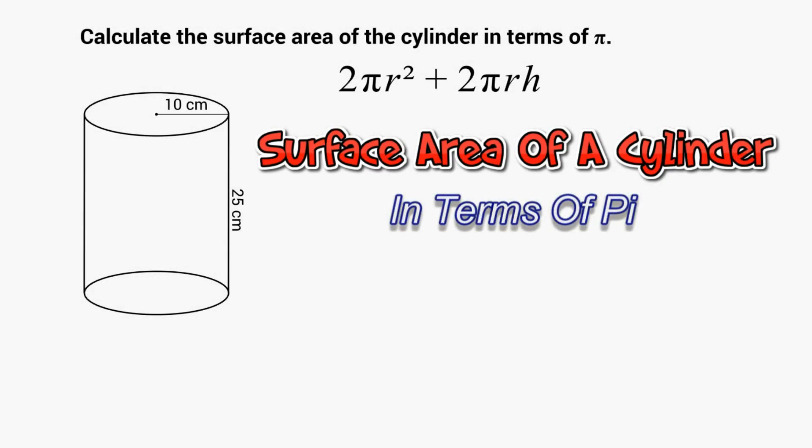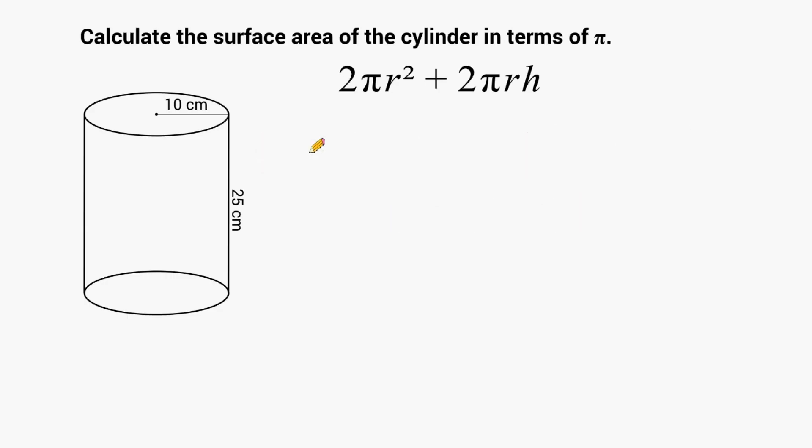Hey, this is Mr. Masonette, and what we're going to do in this video is quickly solve to find the surface area of a cylinder in terms of pi, and we're going to use this equation right here, 2 pi r squared plus 2 pi r h.